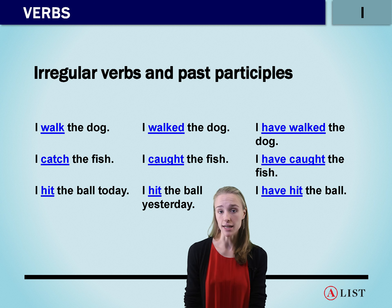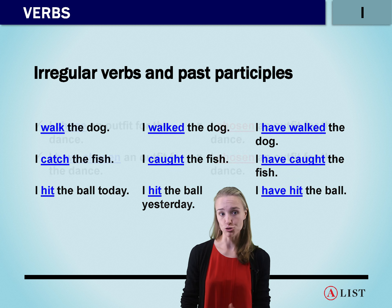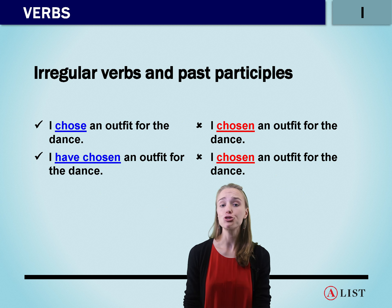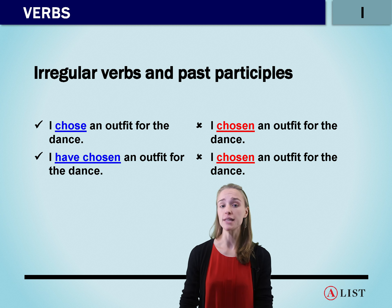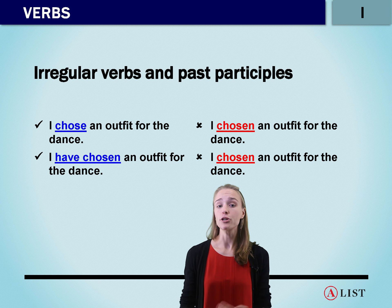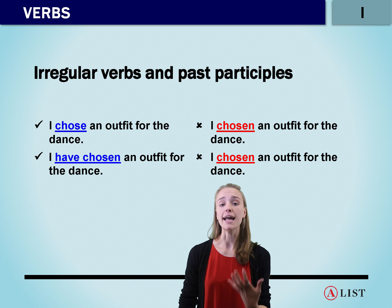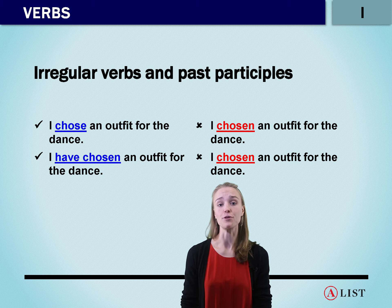However, in certain cases with certain words, we're actually going to need a third change. An example is the word 'choose.' In the present tense, we would say 'I choose an outfit.' But if we were talking about the past tense, we would say 'I chose an outfit for the dance.' If we are using the past participle, though, that is going to be another change: 'I have chosen an outfit for the dance.'